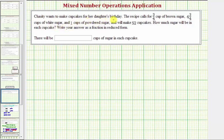Chasity wants to make cupcakes for her daughter's birthday. The recipe calls for three-fourths cup of brown sugar, four and three-fourths cups of white sugar, and one cup of powdered sugar. This will make fifty-two cupcakes. We want to determine how much sugar will be in each cupcake.